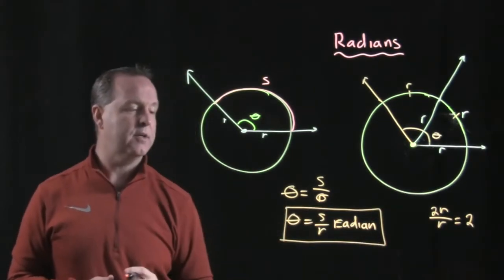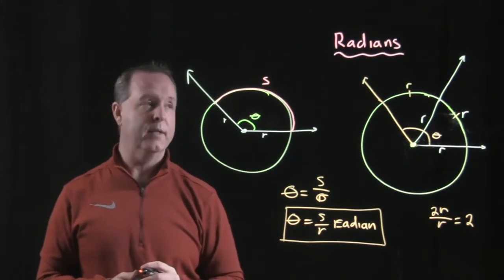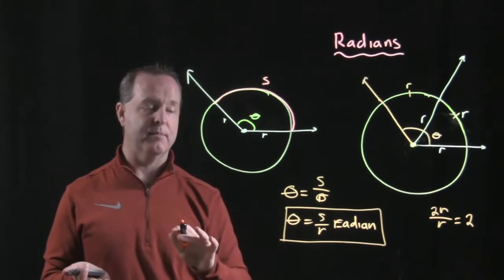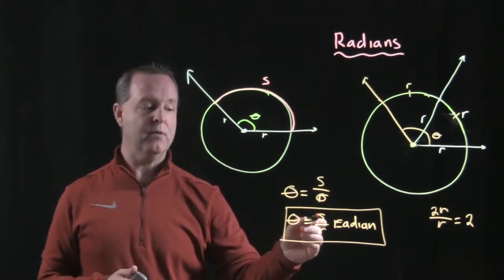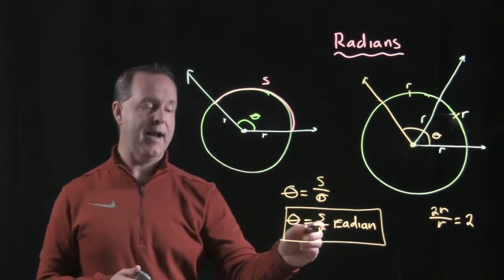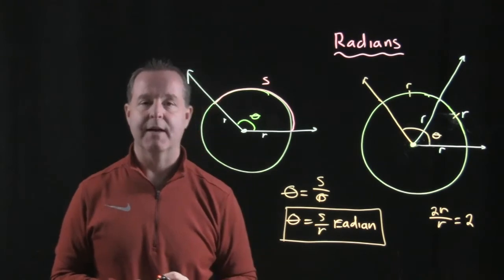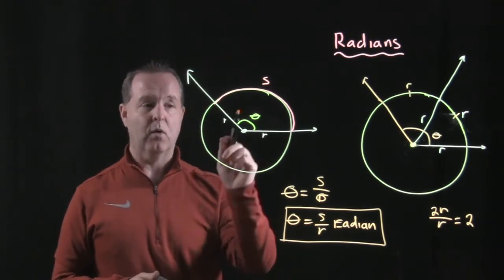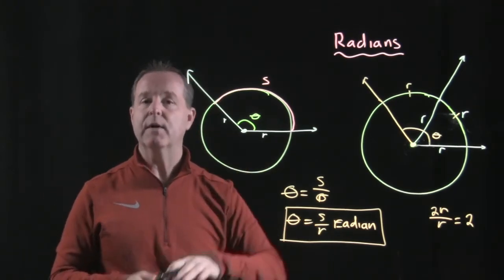So that's our definition that we'll use when dealing with radians and its measurements. Again, it's the ratio or the arc described around the circle divided by the radius gives our definition of how to find the angle or describe the measurement of the angle in radians.